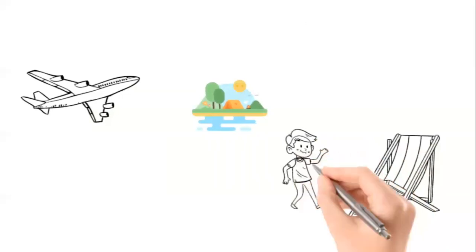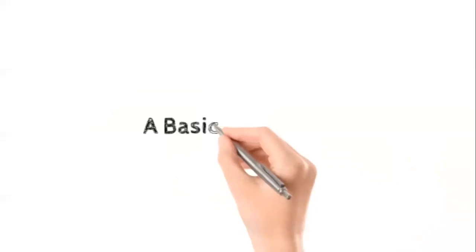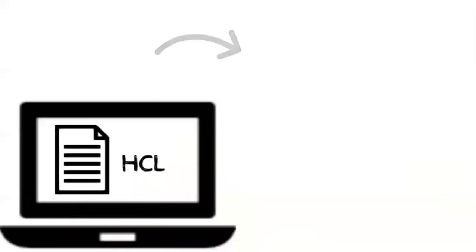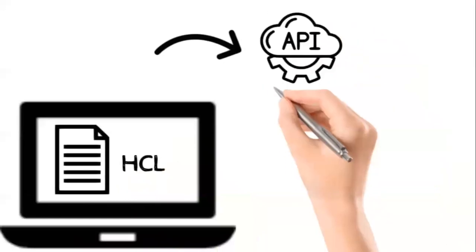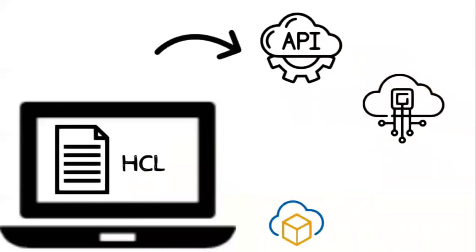Now let's understand exactly how the workflow operates and how things are done. You write a simple JSON embedded code using HashiCorp Config Language. It then speaks to the API of the respective cloud provider, establishes communication, and as per the resource definition provided in your config file, the desired state will be achieved.